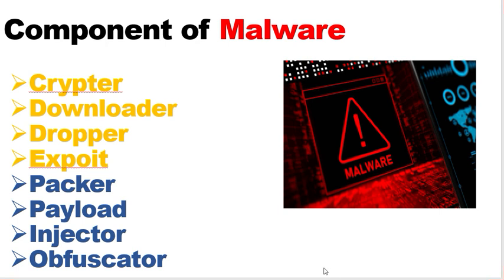The next component is the dropper. A dropper is a type of trojan that covertly installs other malware files into the system. Once malware is downloaded, the dropper helps secretly install additional malware. This is important for retaining or elevating access levels and maintaining control in the target system through an incremental process of dropping new malware code.